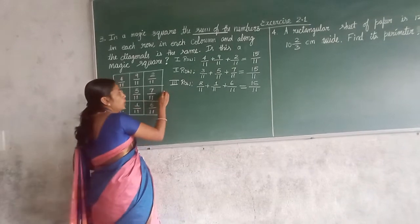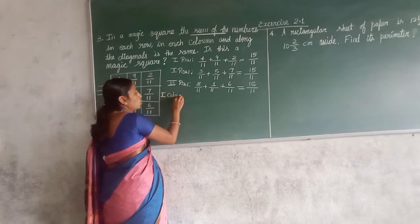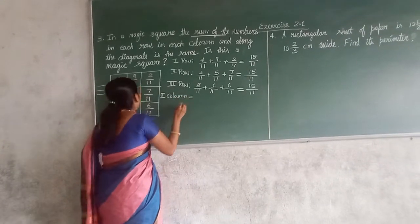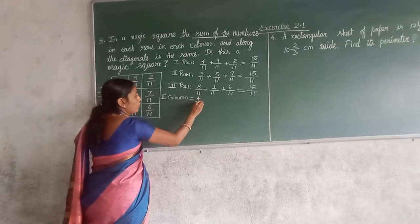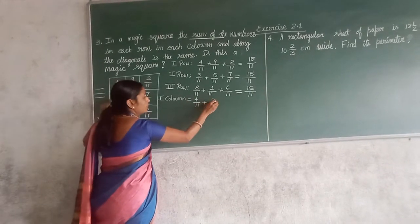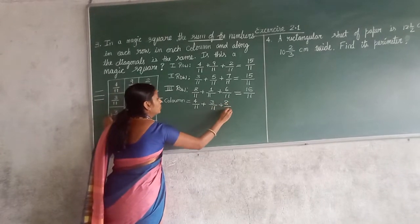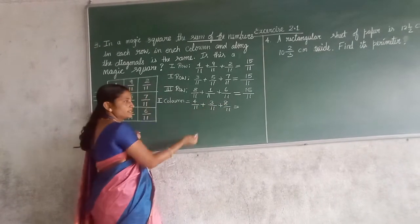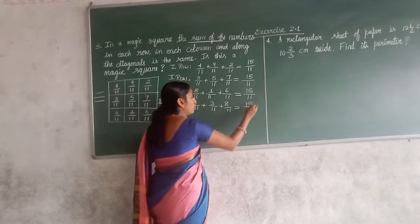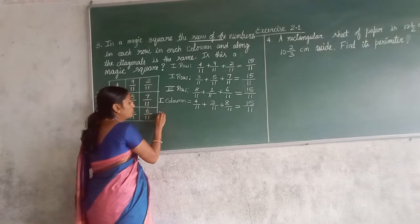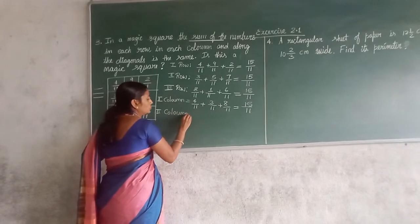Now let us check the first column. So you take in this way. 4 upon 11 plus 3 upon 11 plus 8 upon 11. 4 plus 3, 7. 7 plus 8, 15. Denominator is same, so we don't have much work out to do here.